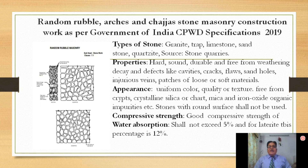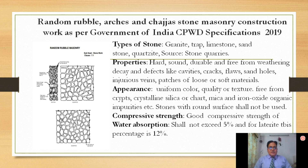The properties required for construction stone are: it should be hard, it should have a very good sound, durable, free from weathering effects, free from various flaws, it should have uniform appearance, its quality and texture should be good, it should be free from crypts, crystalline silica, and other impurities. Its compressive strength should also be very good, and a very important property is that it should not absorb water more than 5%. If it is a laterite stone, this standard is reduced to 12%.